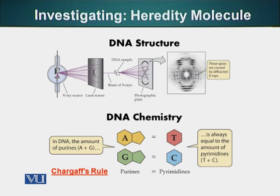An important discovery by Chargaff, also referred to as Chargaff's rule, is that the amount of adenine base equals the amount of thymine base, and the amount of guanine base equals the amount of cytosine base. As we know, adenine and guanine are purines, and thymine and cytosine are the pyrimidines — they are the smaller molecules.